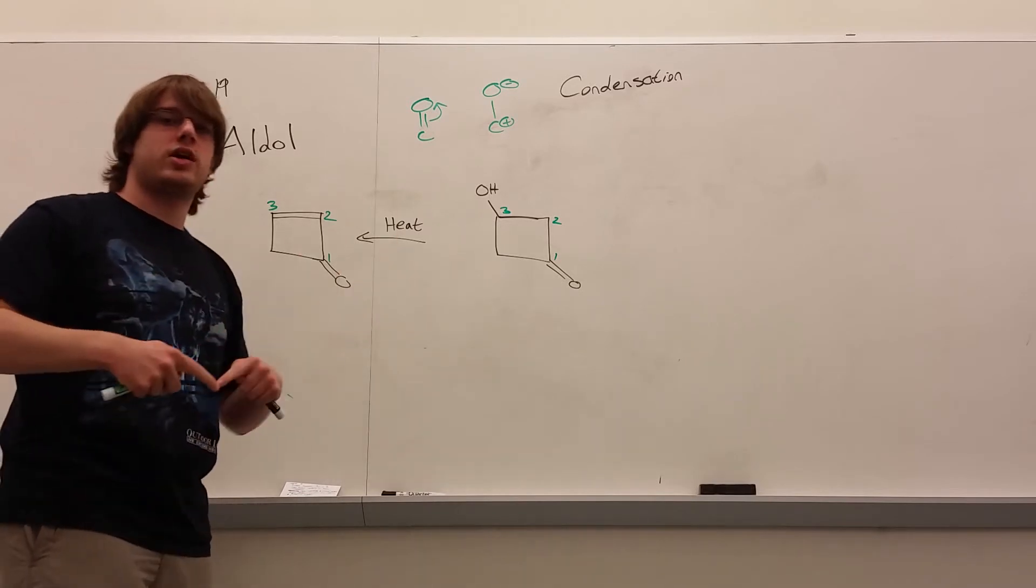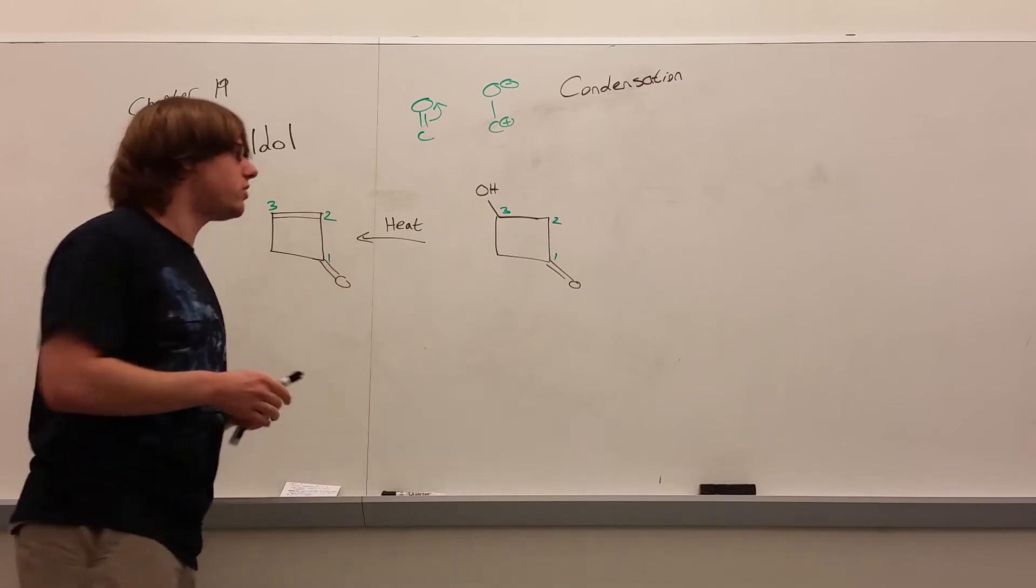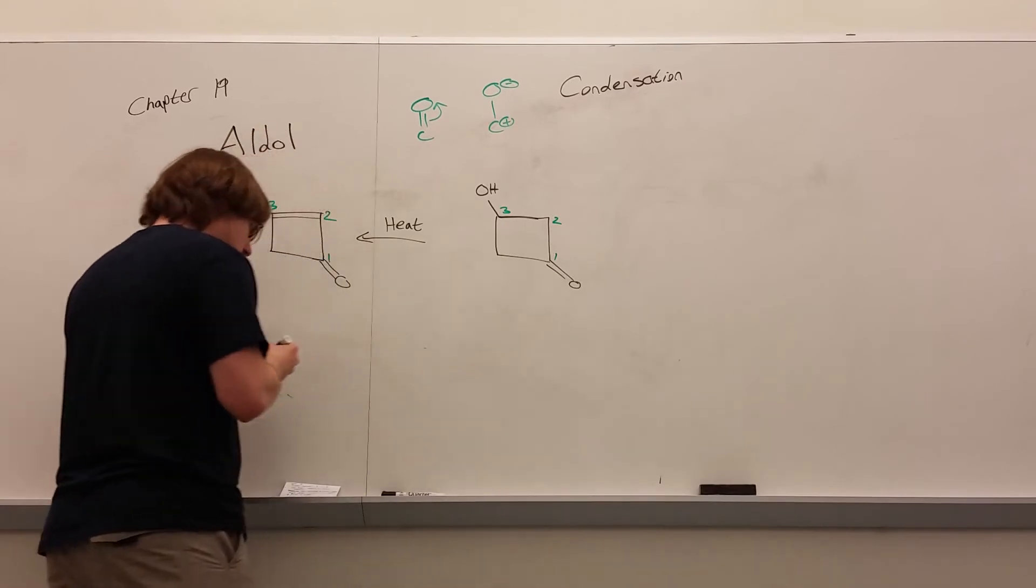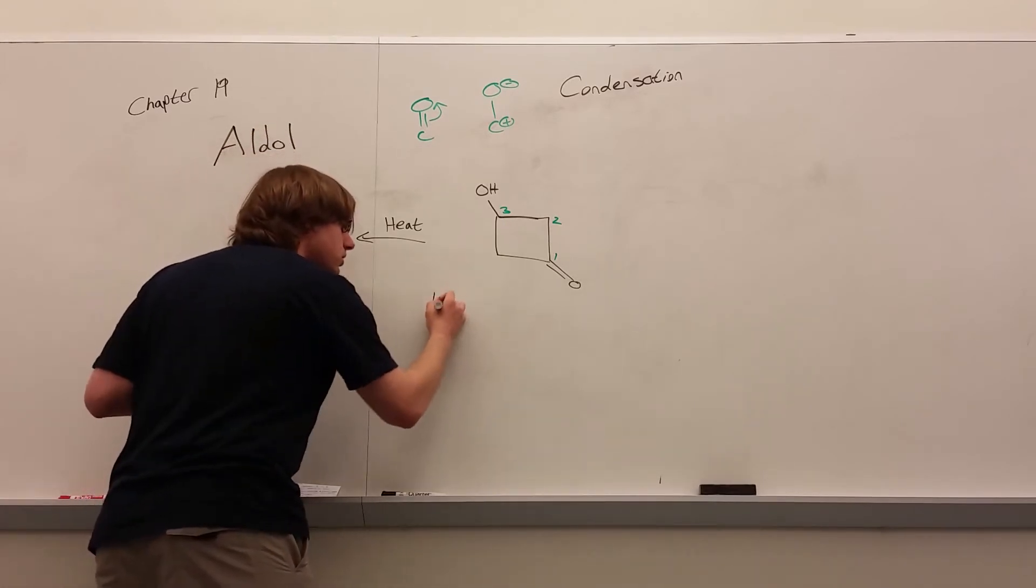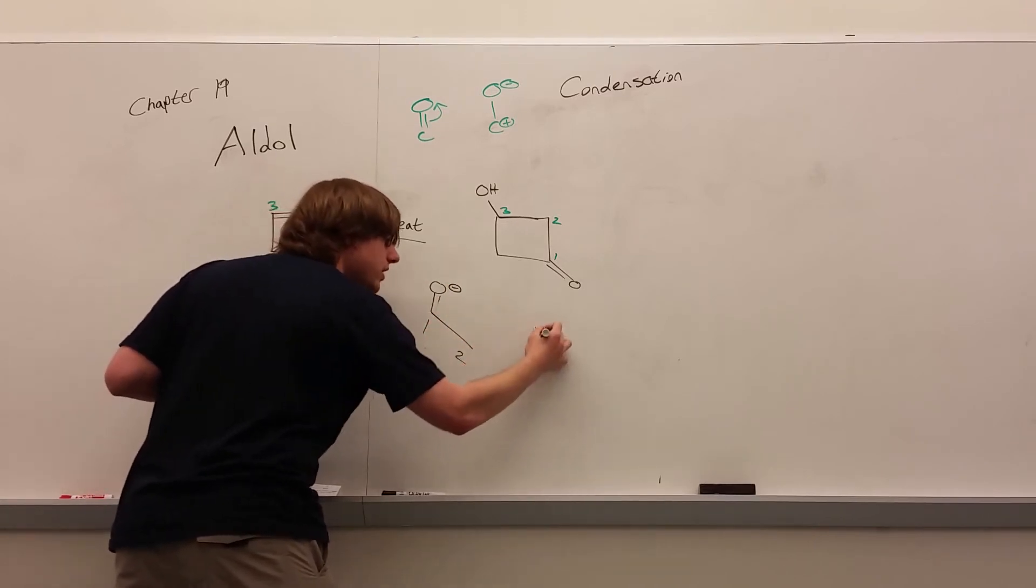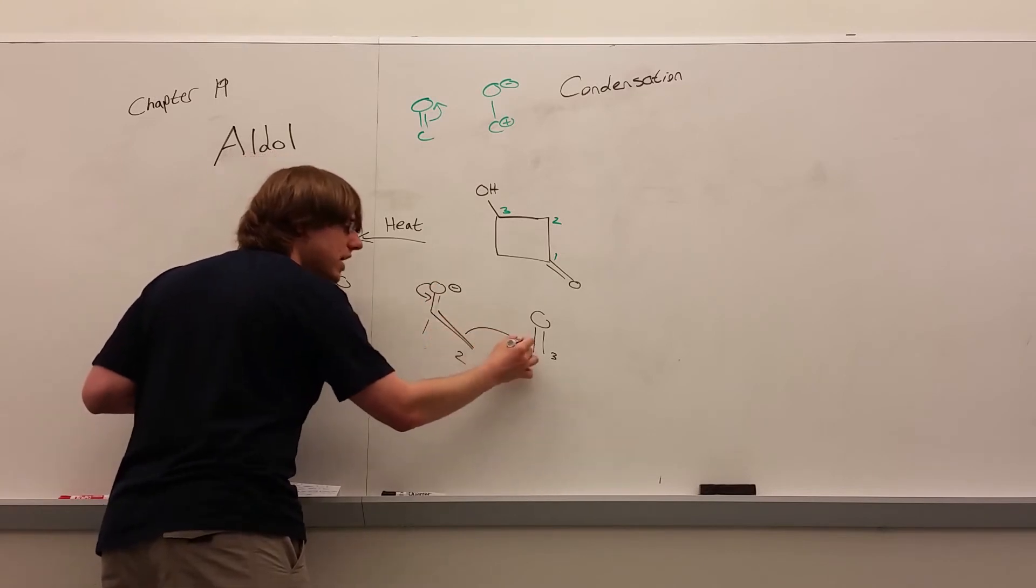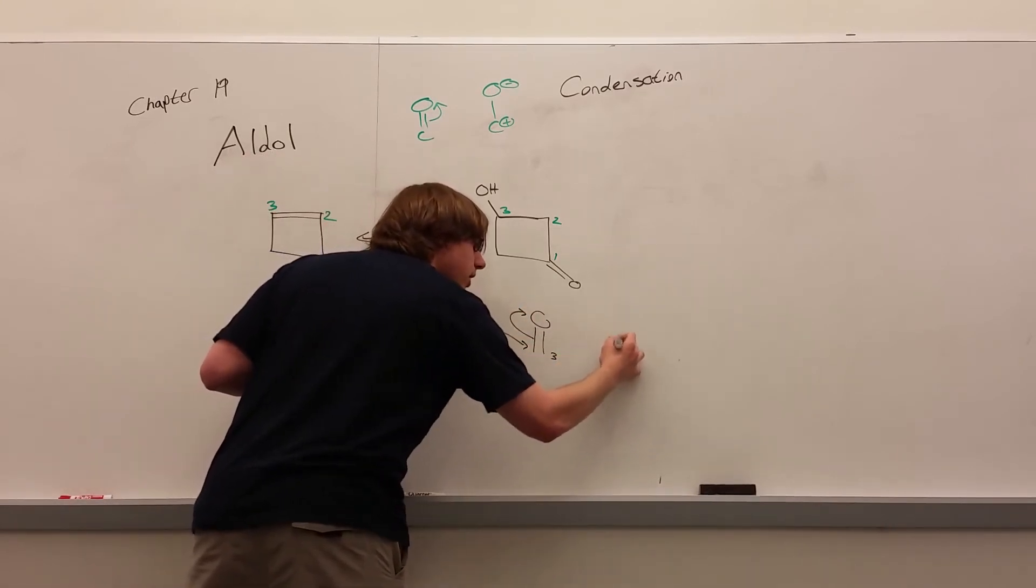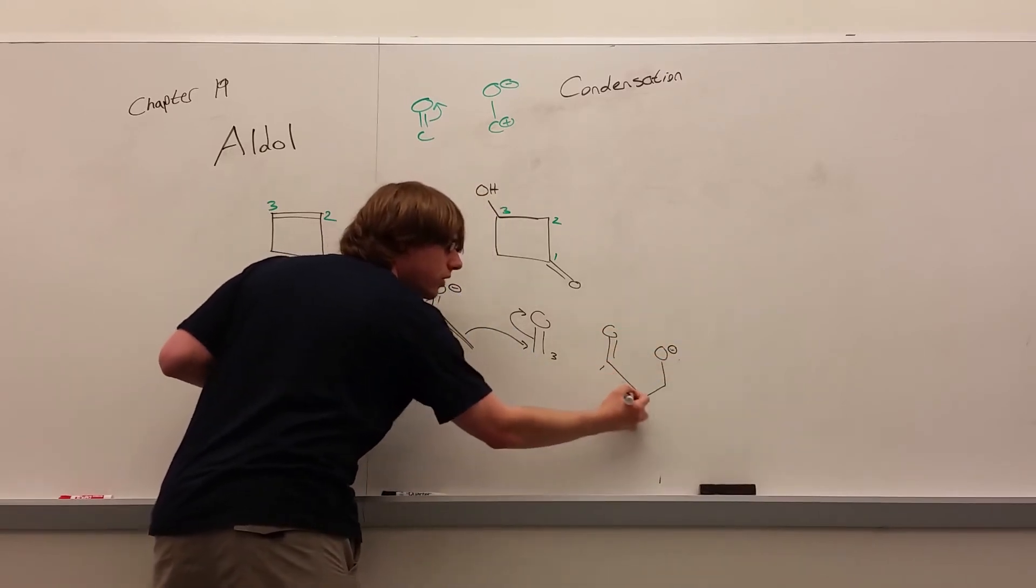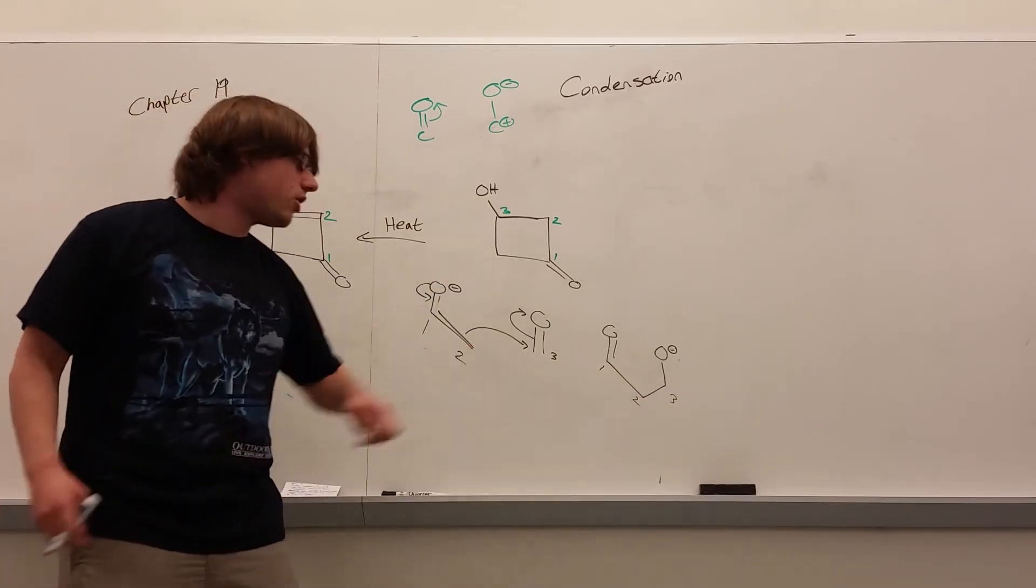We also saw in that previous example that the bond that we formed, the bond that we made that connected the two carbons to each other, was between carbon 2 and 3, right? Because what we did was we had an enolate, an enolate, O minus 1, 2, attacking a carbonyl on carbon 3. And so this swung down, this attack there and this swung up, and you had double bond O, O minus, which became an OH. But notice, 1, 2, 3. So the bond we make in aldol reactions is between that 2 and 3 carbon.